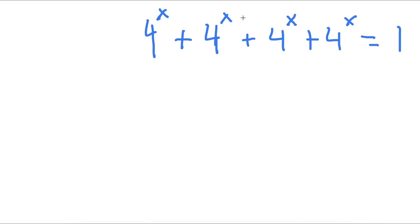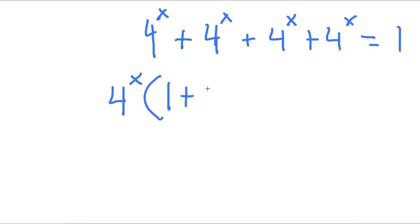In this problem I have 4 to the power of x plus 4 to the power of x plus 4 to the power of x is equal to 1. The first thing I'm going to do is factor out 4 to the power of x. So now I have 4 to the power of x times 1 plus 1 plus 1 plus 1 is equal to 1.